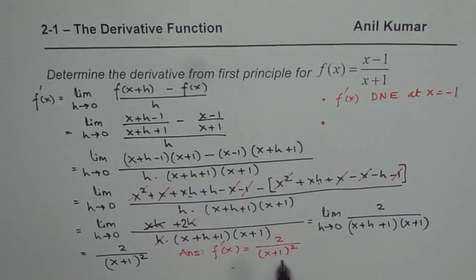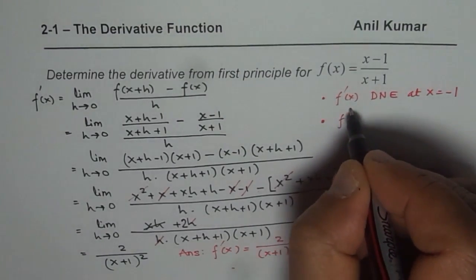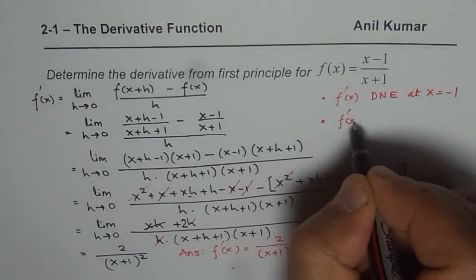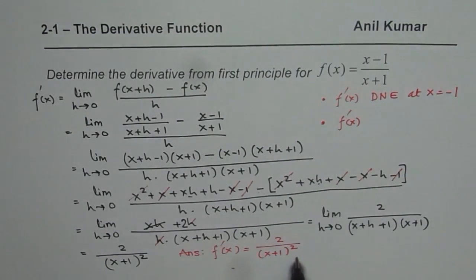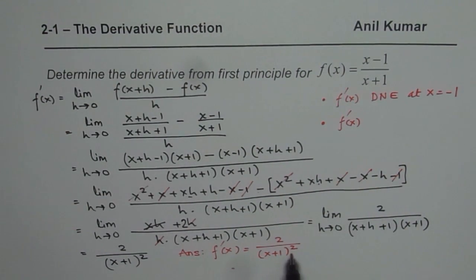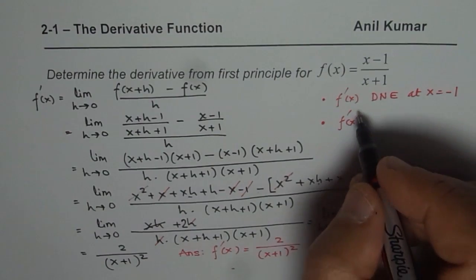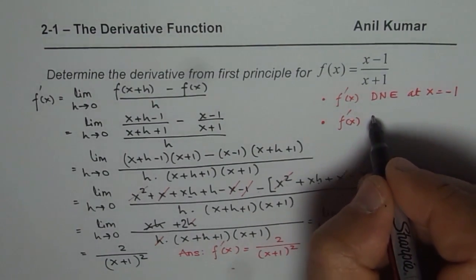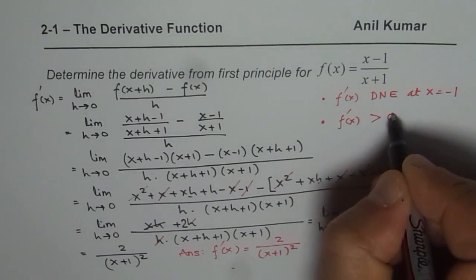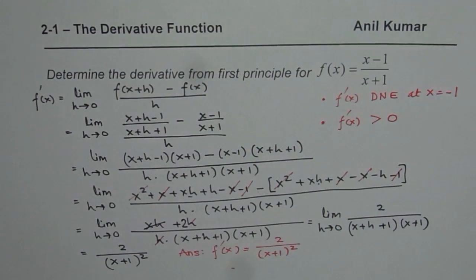The second observation is that the derivative f dash x is always positive. Since the denominator is a square, it is always greater than 0, making the derivative always greater than 0. So those are the two key observations: not differentiable at x equals minus 1, and the derivative is always positive.